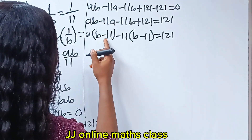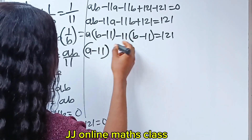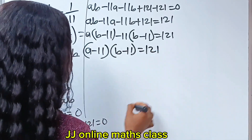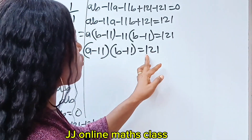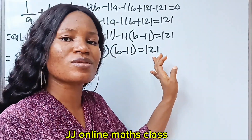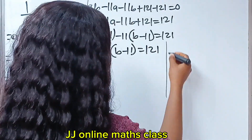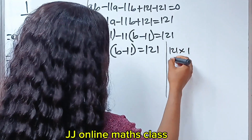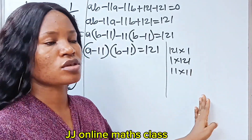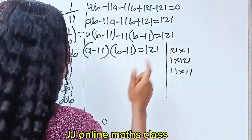So here we have (B minus 11) and (A minus 11). We pick that common factor. Then (B minus 11) is equal to 121. Now, two things that when you multiply them give 121 — the factors of 121 are: 121 times 1, 1 times 121, and 11 times 11. These are the three factor pairs, so we have three cases.